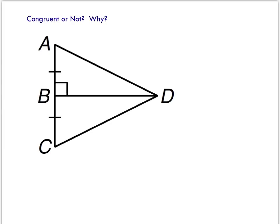Can you prove that these two triangles are congruent? First, let's go through and name the two triangles. Is it possible for us to prove that triangle ABD and triangle CBD are congruent?